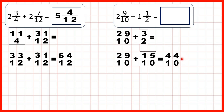But we can turn that back into a mixed number by dividing. 44 divided by 10 is 4, remainder 4, and the denominator stays the same.